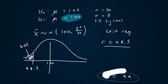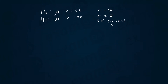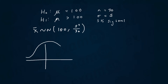Now for the upper tail test, it's really the same thing. First, write out the distribution of x̄, which will be 100 comma 5 squared over 30, and sketch it out. We're trying to work out the value towards the upper end of the distribution such that getting more than it equals 0.05.